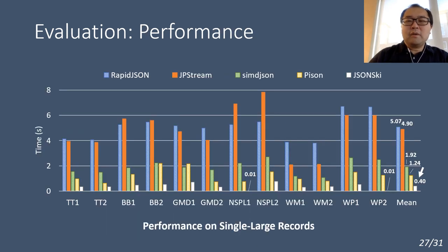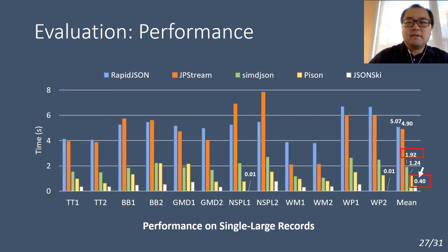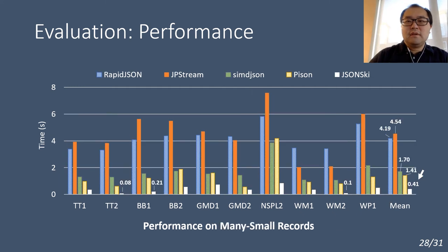This figure reports the total execution time on processing single large records. First, comparing to the existing streaming tool JPStream, we find JSON-Ski runs over 12 times faster, thanks to its bitwise fast-forward optimizations. Second, comparing to other SIMD-based JSON tools, JSON-Ski is about 3 times faster than PISON, and more than 4 times faster than SIMD JSON. In terms of small records processing, the performance results are similar, except that most methods run a bit faster thanks to better cache locality.